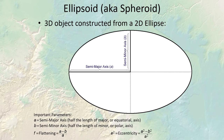An oblate ellipsoid is a 3D object constructed from a two-dimensional ellipse, defined by two variables: the semi-minor axis and the semi-major axis. When you read about spheroids you'll often encounter measures like flattening — calculated as (a minus b) over a — and eccentricity, calculated as (a squared minus b squared) over a squared. You'll also often see one-over-flattening reported rather than flattening itself.